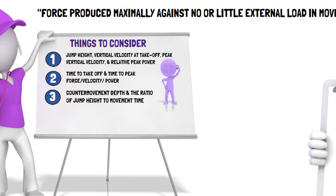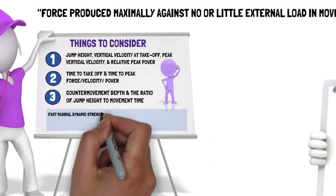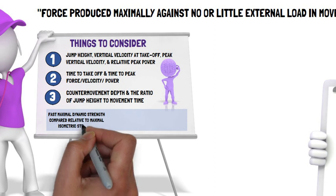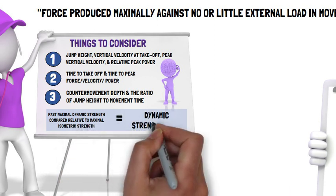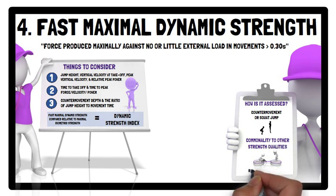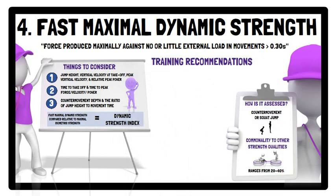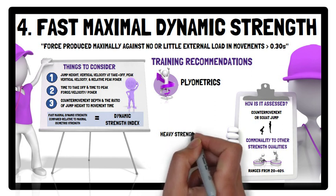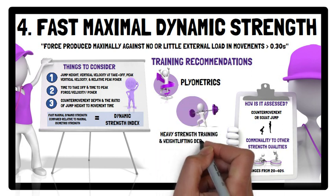The choice of variable within each factor can be determined by what is most reliable, interpretable, and relevant. To help decide when to switch between heavy strength and high strength-velocity training, fast maximal dynamic strength may also be compared relative to maximal isometric strength, known as the dynamic strength index. The commonality to each of the other strength qualities ranges from 20–40%. In terms of training, plyometrics adopting a slow stretch-shortening cycle is recommended as the primary method, while heavy strength training and weightlifting derivatives can also be used as a secondary method.